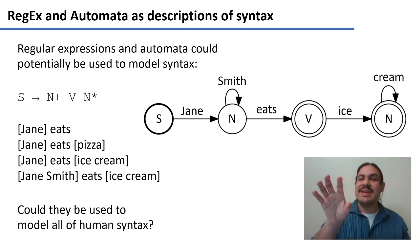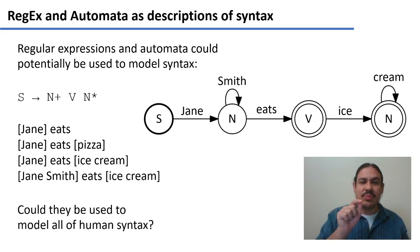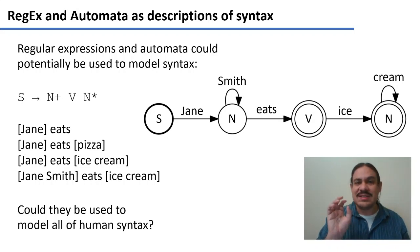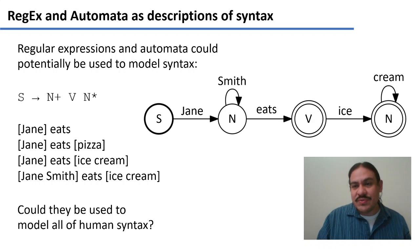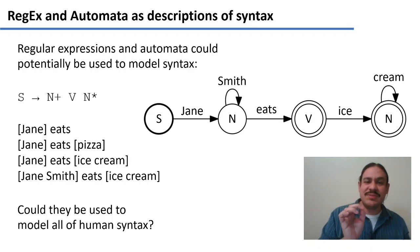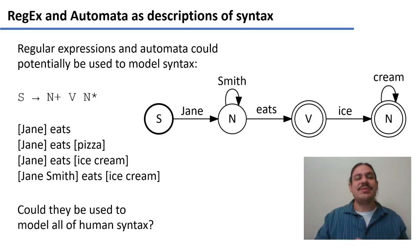We start with a sentence — this is our initial state. Then we get the input 'Jane' as one noun, so we have at least one noun. We can keep getting noun-like inputs such as 'Smith.' Then we jump from state N to state V; this transition takes the input 'eats.' V is an accepting state, so we could exit here and get correct structures like 'Jane eats' or 'Jane Smith eats.' If we continue from V to the final N, we could get direct object nouns — for example, 'ice.' If we exit then, we would get 'Jane eats ice,' which is strange but still a fine sentence. If we keep getting noun inputs, we could have 'Jane eats ice cream' or 'Jane Smith eats ice cream.'